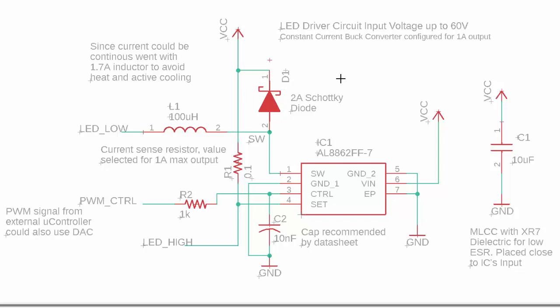For D1, I chose a Schottky diode because it has a lower voltage drop, giving better efficiency. I chose a 2 amp rated diode to give plenty of current margin and reduce heat generation. For C1, I chose 10 microfarads as recommended by the data sheet, using an MLCC — multi-layer ceramic capacitor — with X7R dielectric, also recommended by the data sheet. X7R has a low ESR (equivalent series resistance), which allows the capacitor to charge and discharge quickly to maintain a steady voltage. The data sheet also recommends placing this capacitor close to the IC input, which I'll do in the PCB layout.